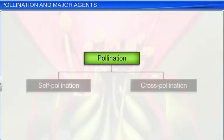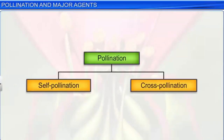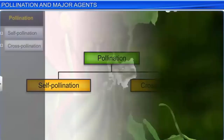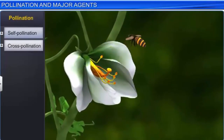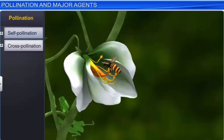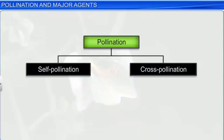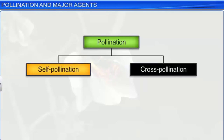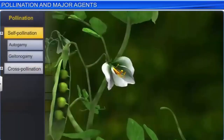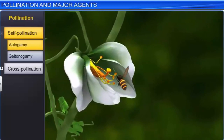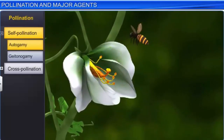Pollination can be of two types: self-pollination and cross-pollination. When pollination takes place within the same flower or between flowers of the same plant, it is known as self-pollination. In plants, self-pollination can occur either through autogamy or geitonogamy. In autogamy, pollen is transferred from the anther to the stigma of the same flower, and is seen in cleistogamous flowers — flowers which do not open at all.